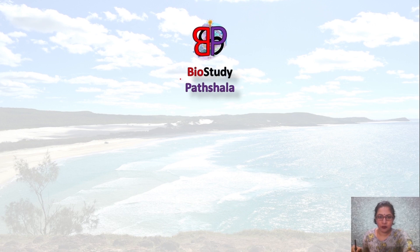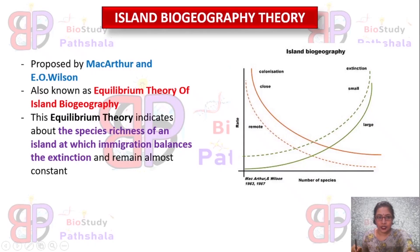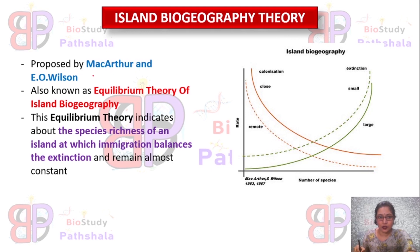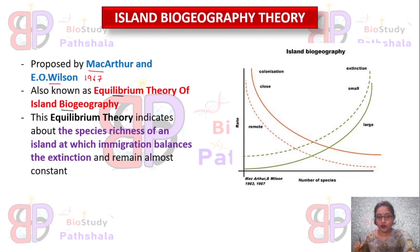Hello, welcome to Bio Study. I am Nilang Juna. Today we will learn about Island Biogeography Theory, a topic from the ecology unit. First, we have to know what an island is — it is a fragmented land part which may either be distantly situated or nearby situated from the mainland. This theory was proposed by MacArthur and Wilson in 1967, and it is also known as the Equilibrium Theory of Island Biogeography.